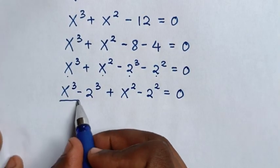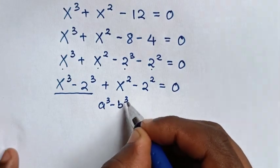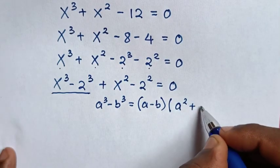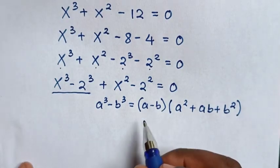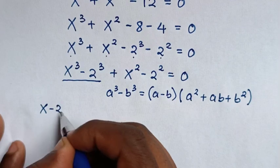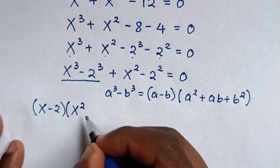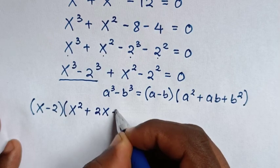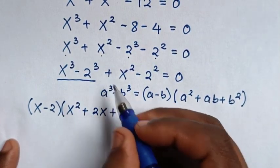In the next step, from the first part we apply the difference of cubes rule: a³ - b³ = (a - b)(a² + ab + b²). So here it will be (x - 2)(x² + 2x + 4), then plus...